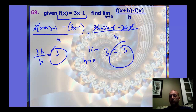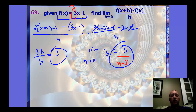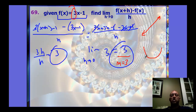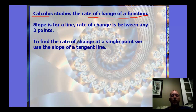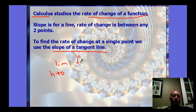Why does that make sense? When we find the difference quotient, we're finding the slope. Look at the problem — it's a linear function, and we already knew the slope is three from the coefficient of x. The difference quotient confirms this. A line always has a slope of three everywhere. For a parabola, the slope changes as you move along it, so you get a slope that depends on x. This process is one of the huge things in calculus: studying the rate of change of a function — not just for lines. To find the rate of change at a single point, we use the slope of the tangent line via the limit of the difference quotient as h approaches zero.